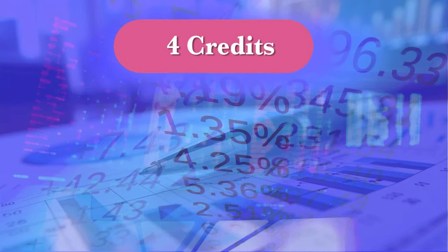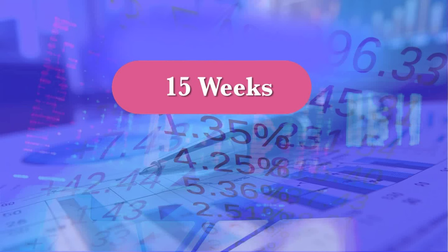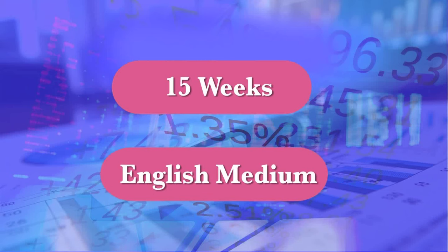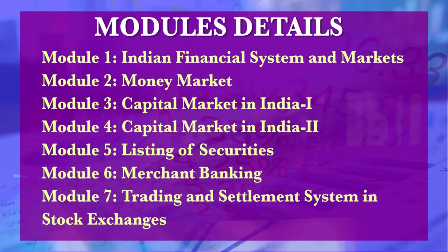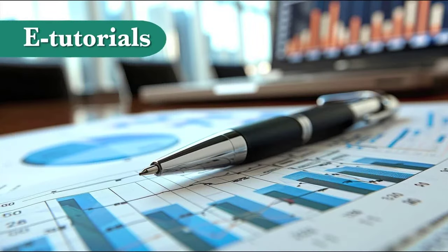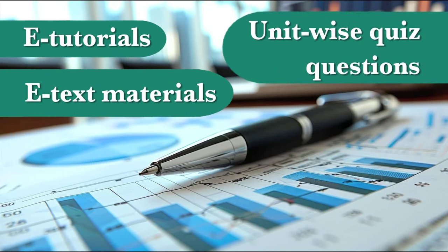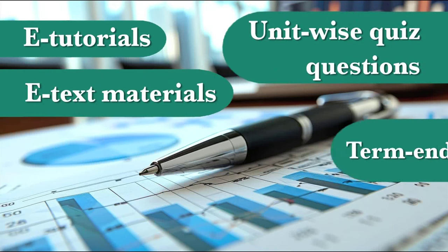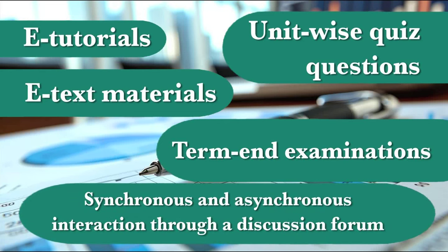This course has been designed on a weekly content basis with a four quadrant approach of delivery. It has four credits, 15 modules and 40 units. The duration of the course is 15 weeks and the medium of instruction is English. The module contents include Indian financial system, money market, capital market, merchant banking, and more. Every module has been designed with e-tutorials, e-text materials, unit-wise quiz questions, term-end examinations and synchronous and asynchronous interaction through a discussion forum.